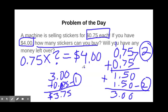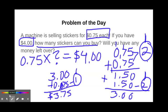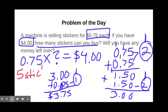Now, I have $4, so I do have more money left over, but I don't have enough money left to get a whole other sticker. I've spent $3.75, so that must mean I have one quarter left from my original $4. The stickers are $0.75, so we can't afford another one. So we've bought five stickers altogether. We can buy five stickers, and we did have money left over — we had $0.25 left.